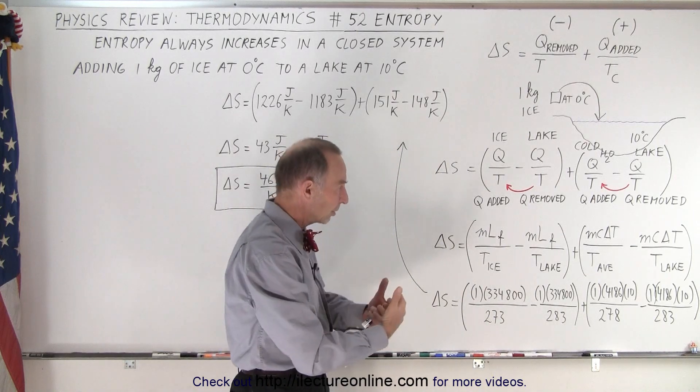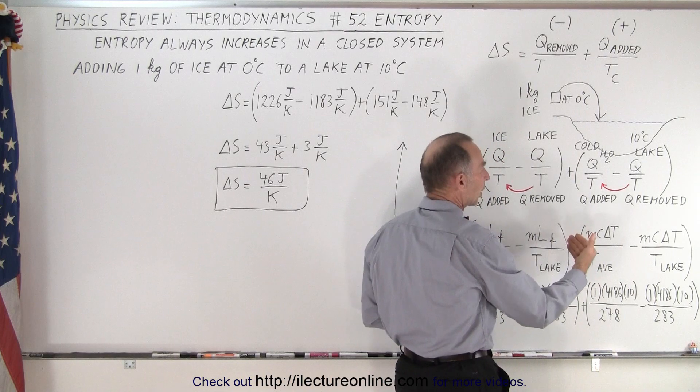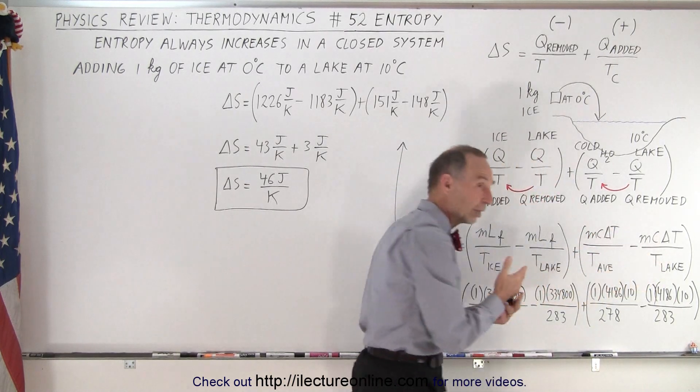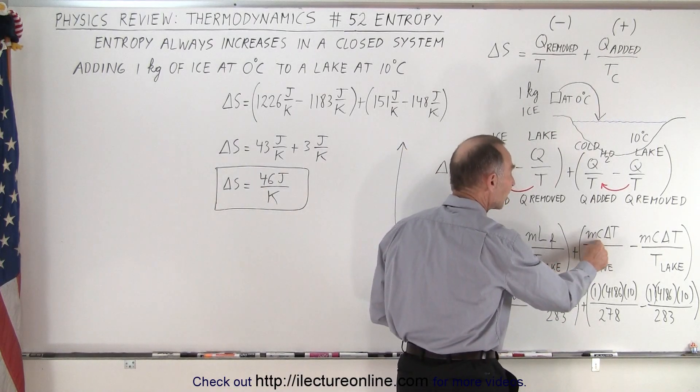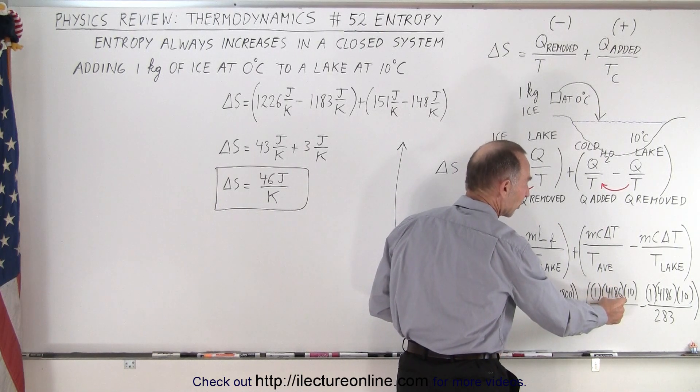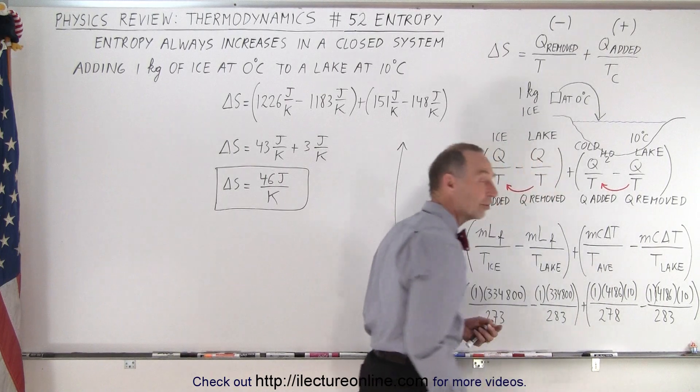When the water then, once the ice is melted and the cold water is now heated up, we know that the amount of heat required to bring the water from 0 degrees Celsius to 10 degrees Celsius, so that it will be in thermal equilibrium with the lake, is going to be MC times delta T. 1 kilogram times the amount of heat per kilogram per degree Celsius times 10 degrees Celsius increase.